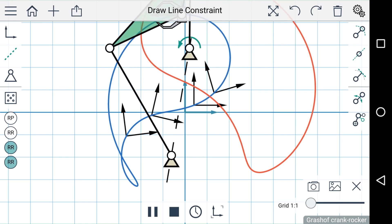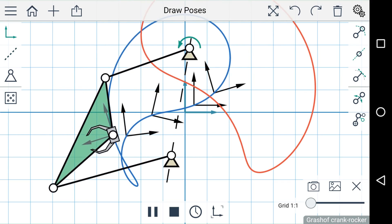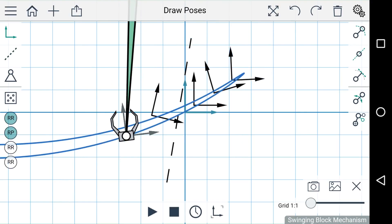And now that we have that line constraint, we can add more poses, and once again MotionGen will give us an approximate solution.